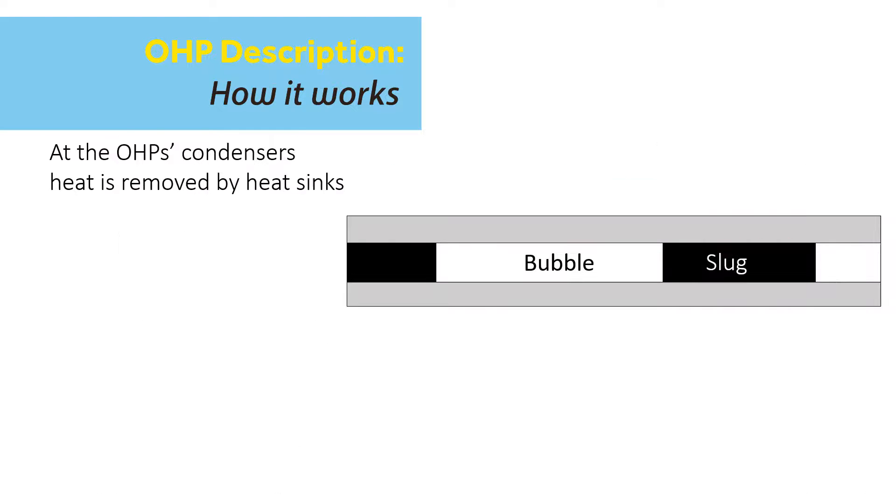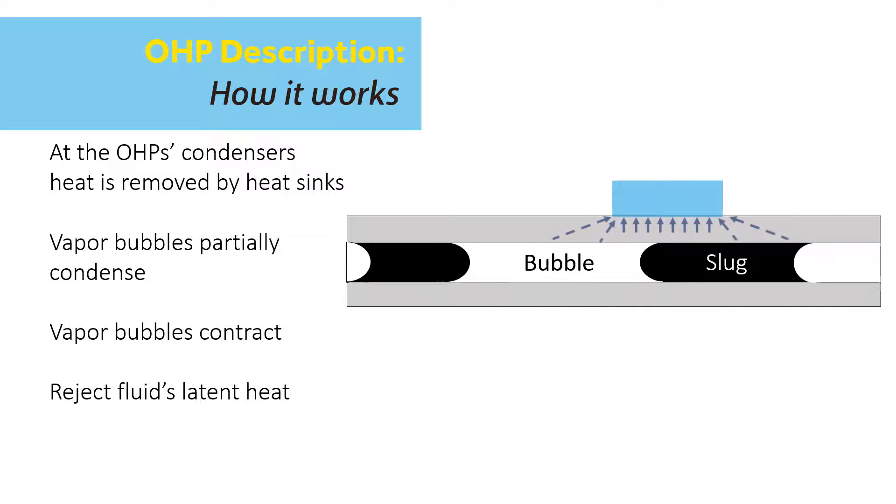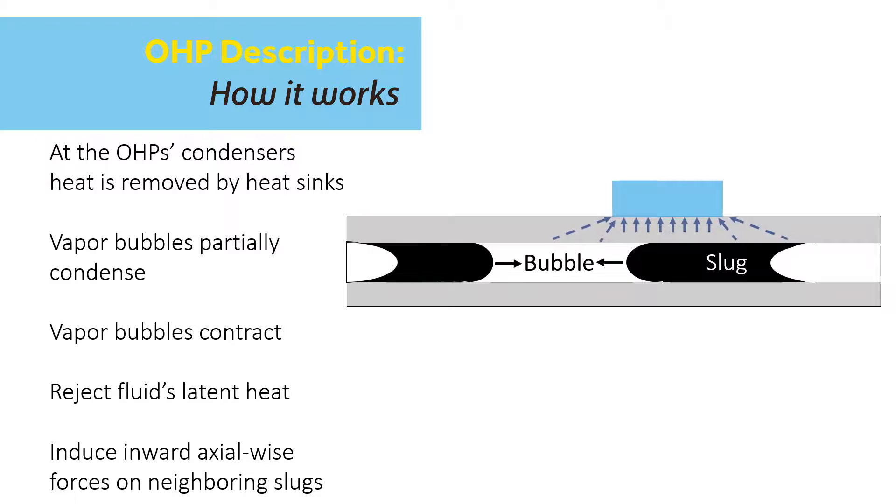At the heat sink, the vapor bubbles partially condense and contract axially. This both rejects heat due to the enthalpy decrease of the working fluid and induces an inward axial-wise force on the neighboring chain of slugs and bubbles.